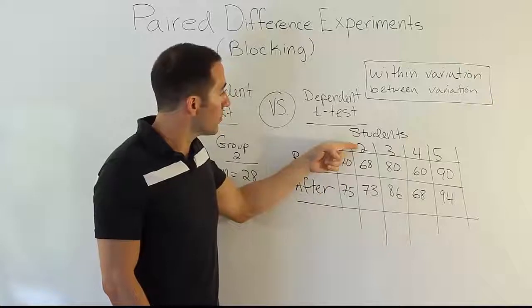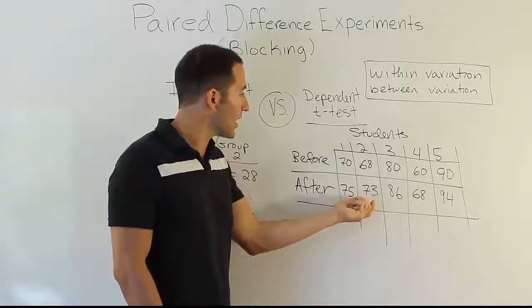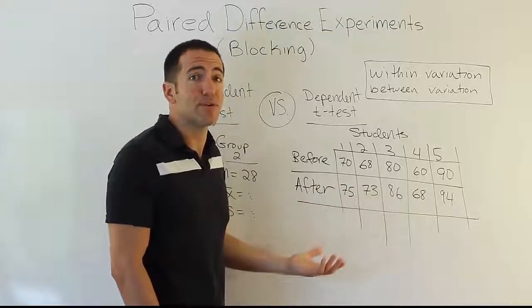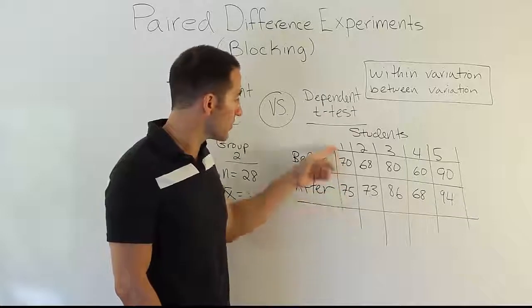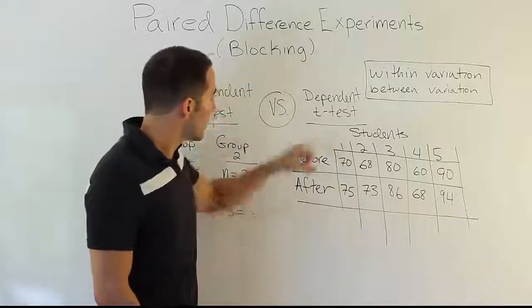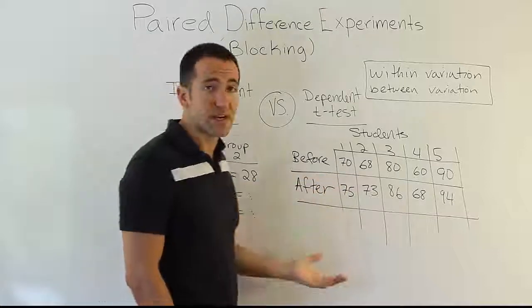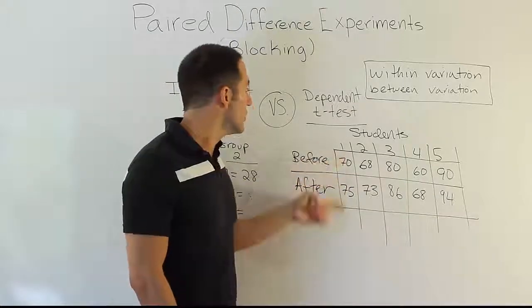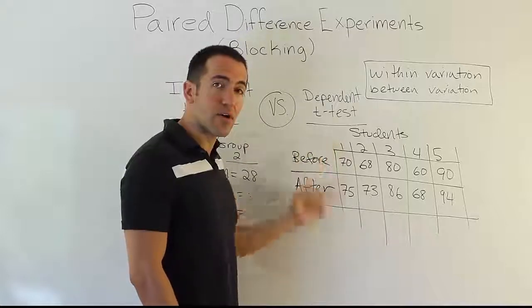Because student two, for example, when he takes the exam before and after, the score on that exam is going to depend upon student two's ability somewhat. So in other words, there's going to be some connection between the two results. If I compare one student to another student, then of course, I would have very different test scores possibly. Because there's no joining characteristic.